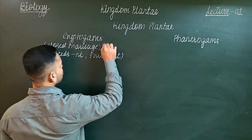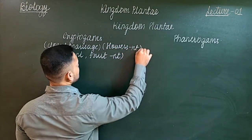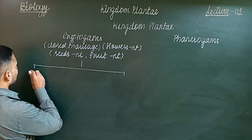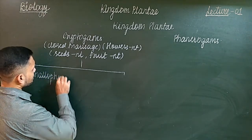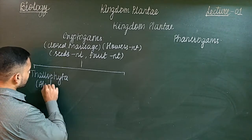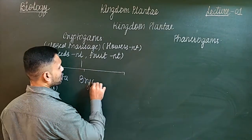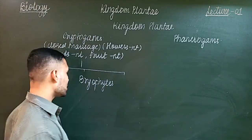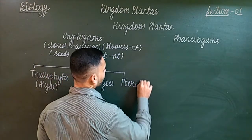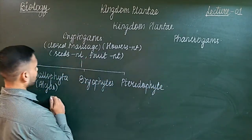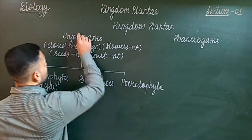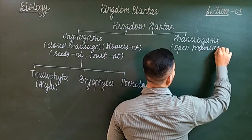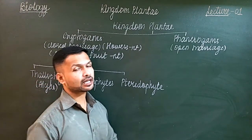In Cryptogams, they are classified into three groups: Thallophyta — which includes algae, as 'thallo' means having a thallus body and 'phyta' means plant. Then Bryophytes, called amphibians of the plant kingdom because they were the first plants to try to survive on land. And the last one is Pteridophytes. This is how they evolved — algae first, then from algae came bryophytes, from bryophytes evolved pteridophytes.